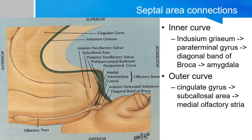The lateral olfactory striae is directed across the lateral part of a structure called the anterior perforated substance, and then it bends abruptly medially towards the uncus and the parahippocampal gyrus. The medial and lateral olfactory striae arise from the posterior aspect of the olfactory tracts and form the anterior margin of the anterior perforated substance.